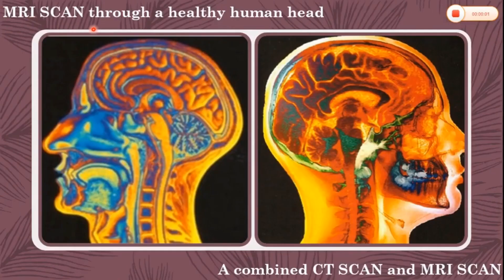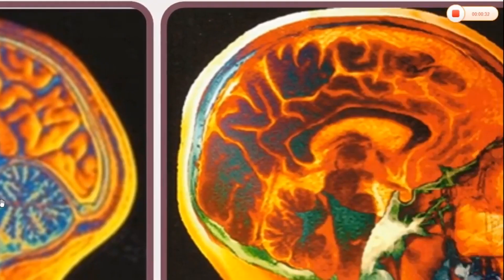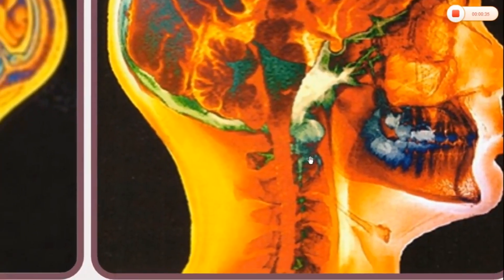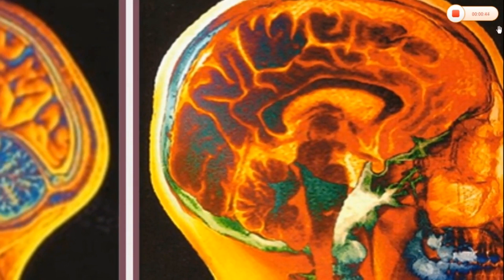This picture shows an MRI scan through a healthy human head. Here, different tissues which are identified by their different relaxation times are colored differently. This is a combined CT and MRI scan that shows how the tissues revealed by MRI are related to the bone structure shown by X-rays. Let us have a magnified view to see the detail. See how the tissues which are revealed by MRI relate to the bone structure revealed by a CT scan. Thank you for watching.